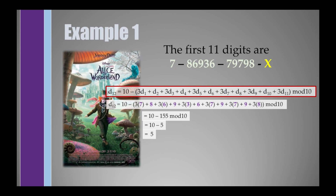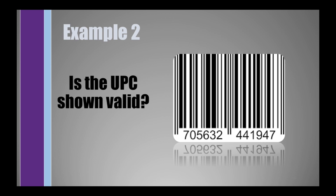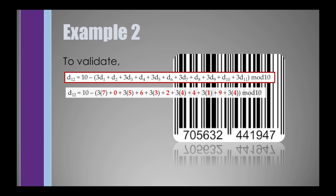For our second UPC example, let's determine if the UPC 705-632-441947 is valid. Here D1=7, D2=0, D3=5, up to D11=4, and D12=7 is the given check digit. Multiplying the odd-subscript digits by 3 and substituting into the equation gives 93. Since 93 modulo 10 gives remainder 3, and 10 minus 3 is 7, the required check digit is 7, which matches the given value — so this UPC is valid.